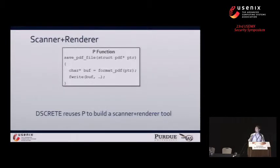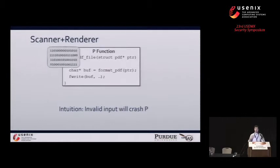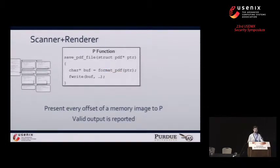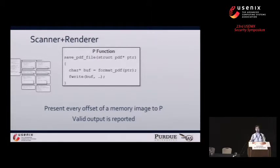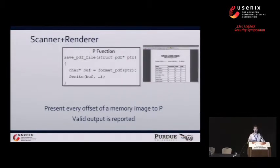Discrete aims to reuse this logic to build a scanner plus renderer tool. The intuition here is that the P function is going to perform various parsing and formatting on that input data structure. And so when presenting P with invalid input, we can expect P to crash. Based on this intuition, we want to present every offset within a suspect's memory image to this P function. Eventually we'll hit that valid data structure instance within the memory image, and P is going to render the natural application output that would have been generated using the data frozen in that memory image.